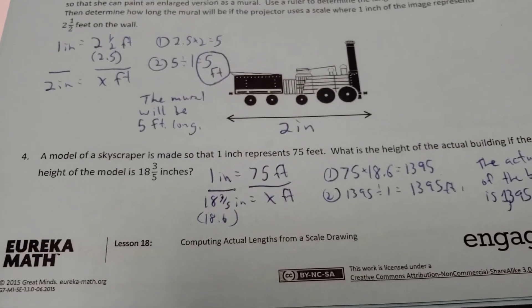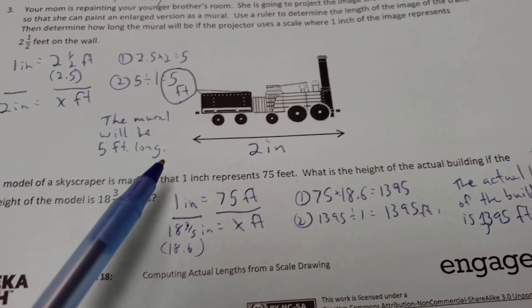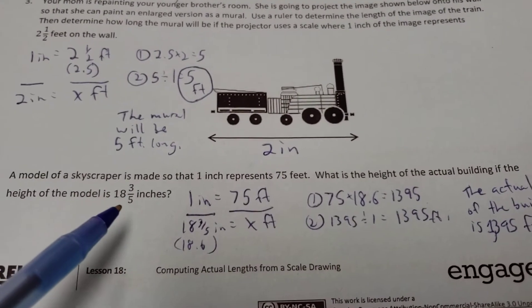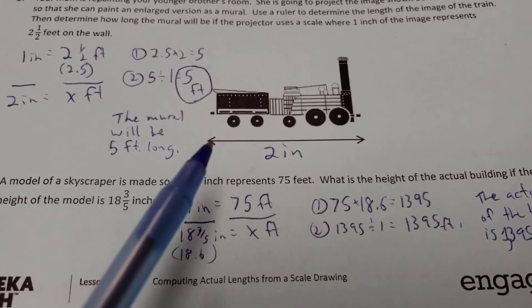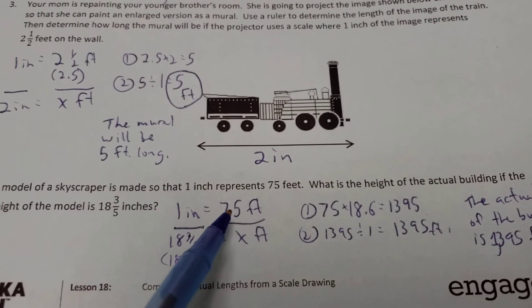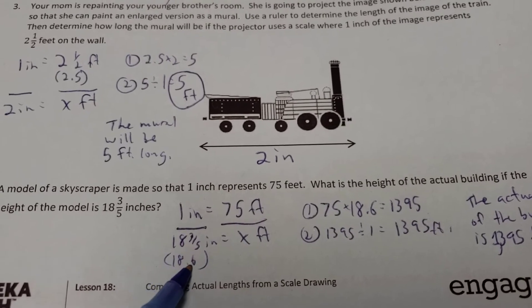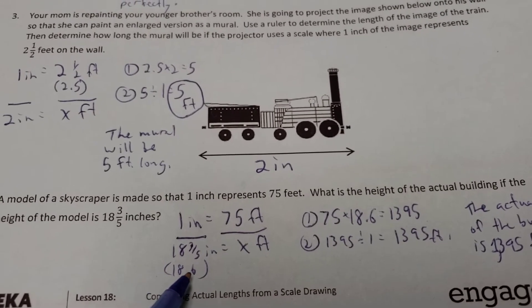Number four. You have a model of a skyscraper. It's made that one inch represents 75 feet. So what's the height of the actual building? The height of the model is 18 3/5ths inches. Well, the scale is one inch equals 75 feet. 18 3/5ths. Let's take three divided by five. I get a 0.6. 18.6 would be a little easier to use.